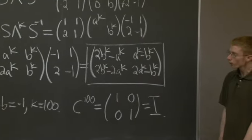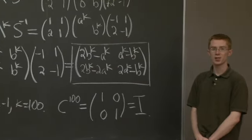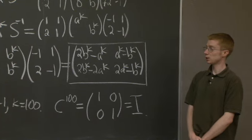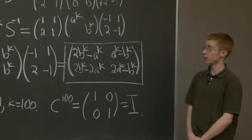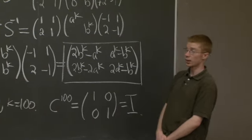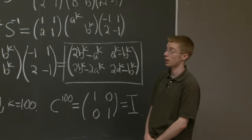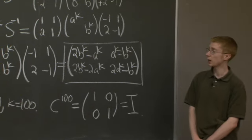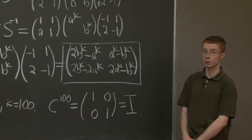Great. OK, now to summarize how do we take powers of a matrix, well, first we diagonalize. We write our matrix as S lambda S inverse. And then we just take powers of the diagonal matrix.